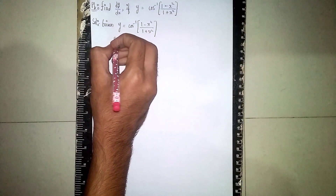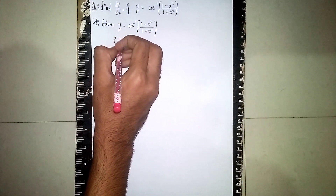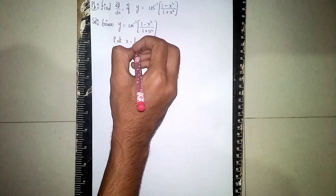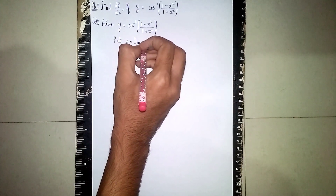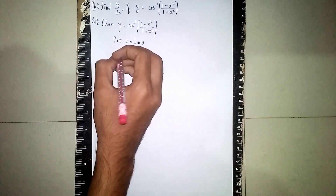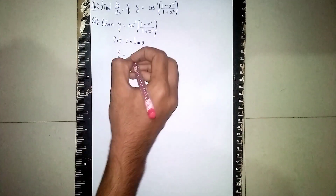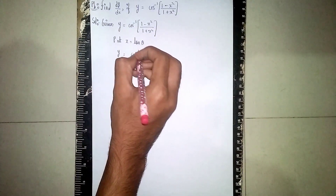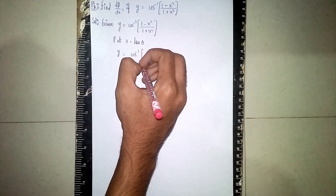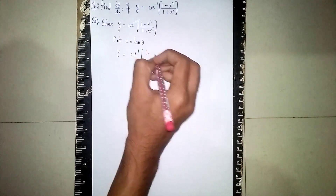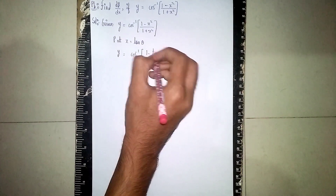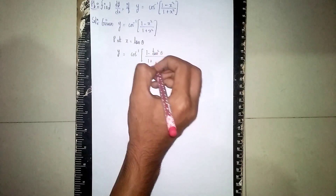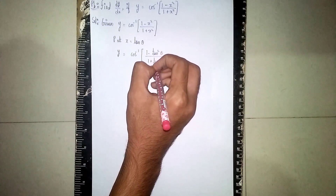Now put x is equal to tan theta. Why am I writing x as tan theta? So it becomes y is equal to cos inverse of (1 minus tan square theta) by (1 plus tan square theta).